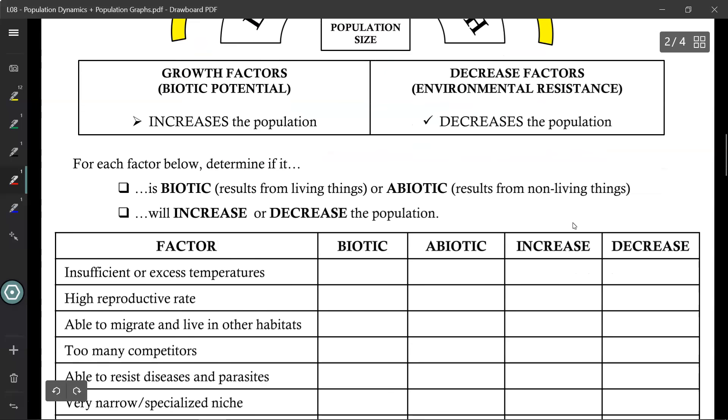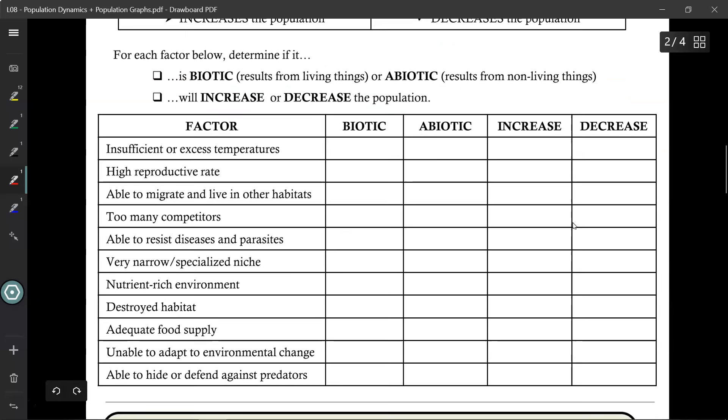So what I want you to do right now is for each of these factors below, determine if it is biotic, meaning results from living things, or abiotic, resulting from non-living things, and whether or not it will increase or decrease the population.